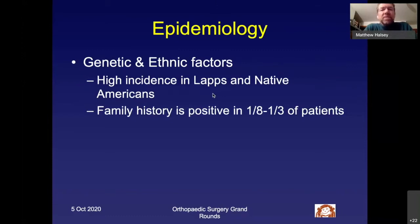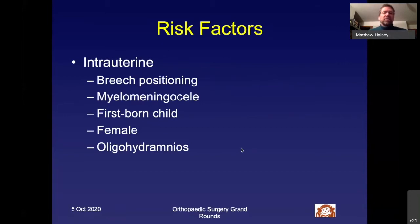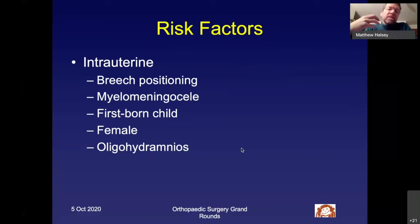There is some epidemiology associated with DDH. It's uncommon in African-Americans but very common in Laplanders and Native Americans. Family history is very important — any time you see a child with a chance of having DDH, you want to ask about family history, as many have a family history of such a problem. The biggest risk factors relate to what happens in utero. The most important is breech presentation, which places the hip in extreme flexion where the femoral head is not well seated in the acetabulum, preventing normal acetabular development.